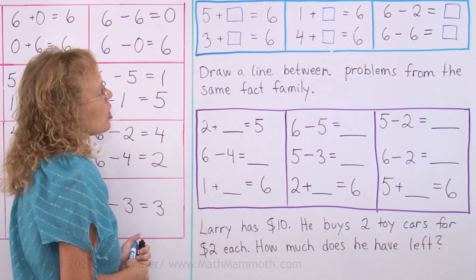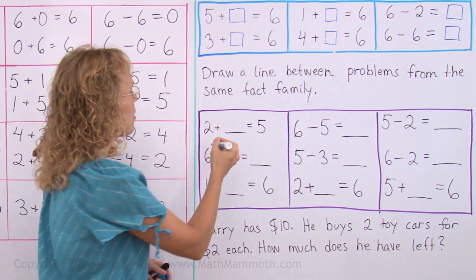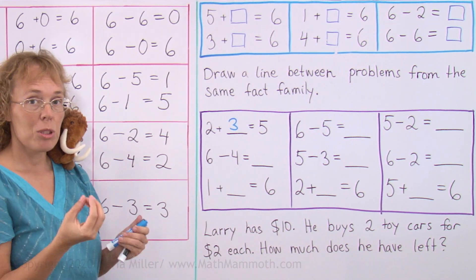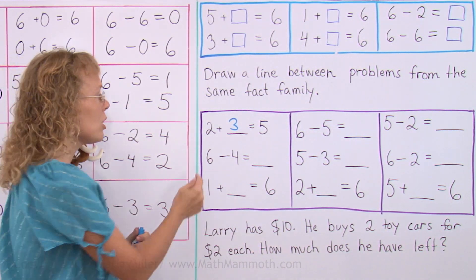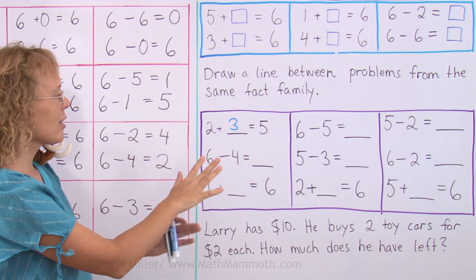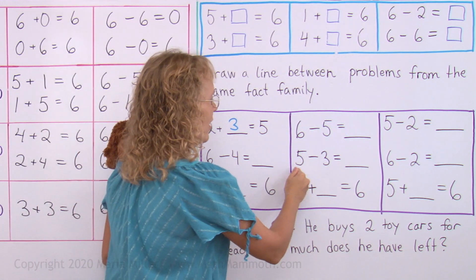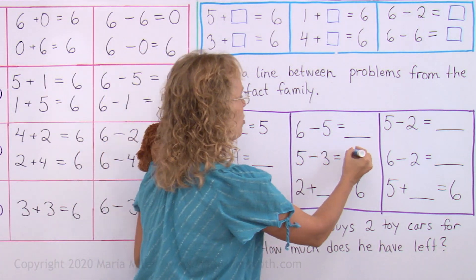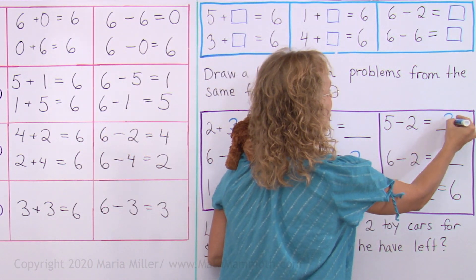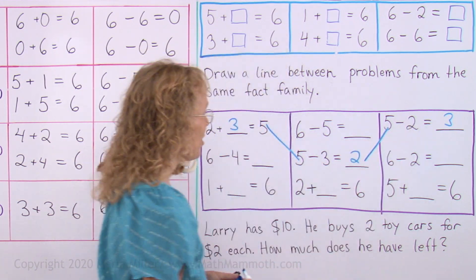We could first solve these problems. Let's start here. Two plus what makes five? That's three. So this addition fact comes from a fact family that uses two and three and five. So now I can spot where else are problems that use two and three and five. Okay? This one, right? And two goes here. Two, three, five. And then here, five minus two equals three. So I just draw a line, that way and that way.